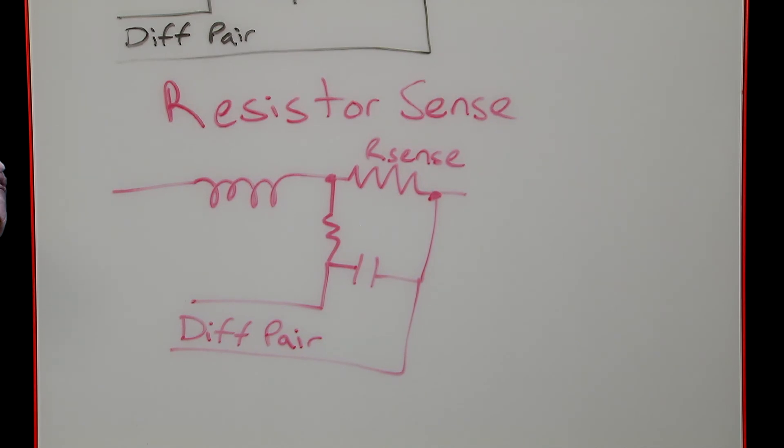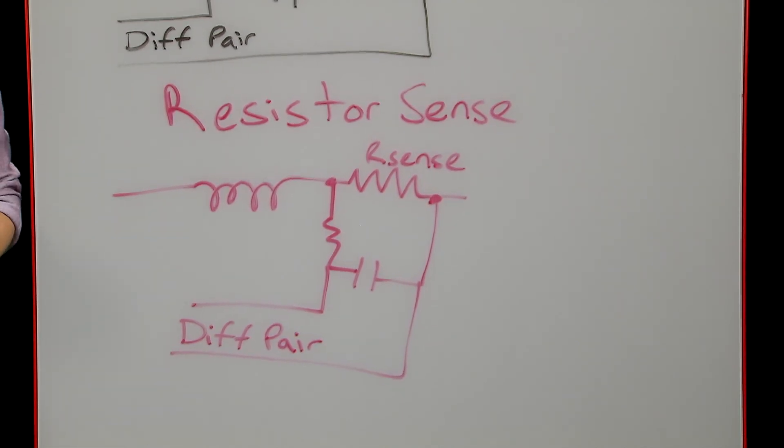Resistor sensing is simpler to implement, but it adds an additional loss component to the phases, which hurts your efficiency.